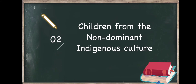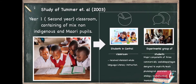Moving on to the second main idea: children who may also be at risk of difficulty in reading because they come from a non-dominant indigenous culture. Children from non-dominant indigenous cultures may be at risk of literacy difficulties if they have not been exposed to phonological activities which foster effective literacy development. A study by Tanner et al. focused on Native American children in North America, Maori children in New Zealand, and Aboriginal children in Australia, who face risk of literacy difficulties upon school entry due to limited exposure to preschool phonological activities such as sound-symbol development and phonological awareness.